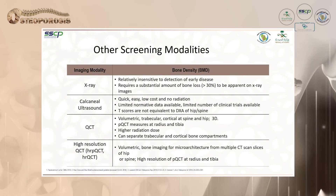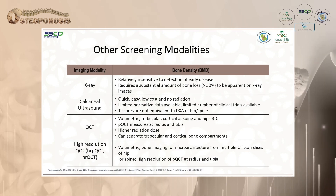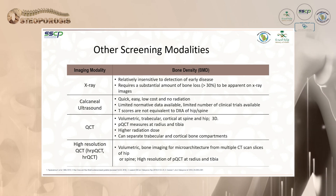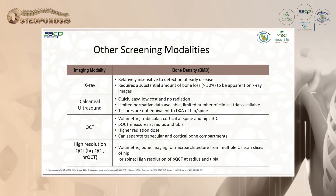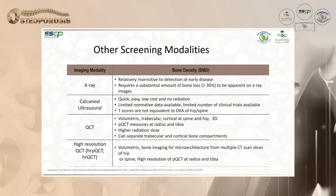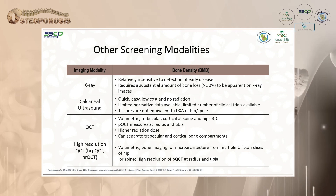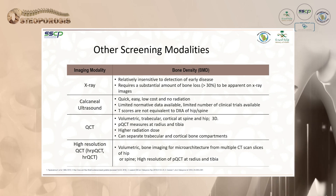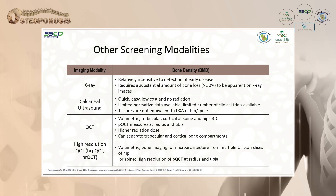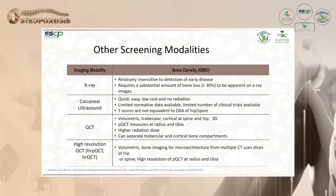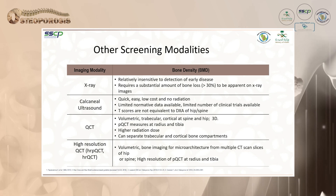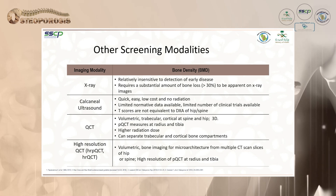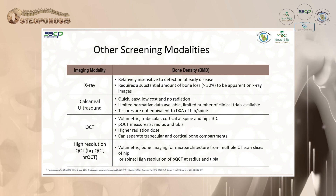Plain X-ray is not sensitive for osteoporosis — more than 30% bone loss is required before changes appear. Calcaneal ultrasound and quantitative CT are also available modalities, each with their own characteristics. CT carries a higher radiation dose, so caution is required.